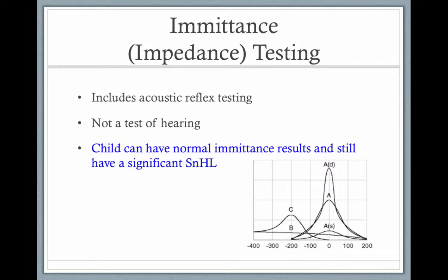Type A is normal. With AS, B, or C, you might have some conductive hearing loss. With type B, you'll definitely have a conductive hearing loss and definitely fluid in the middle ear.